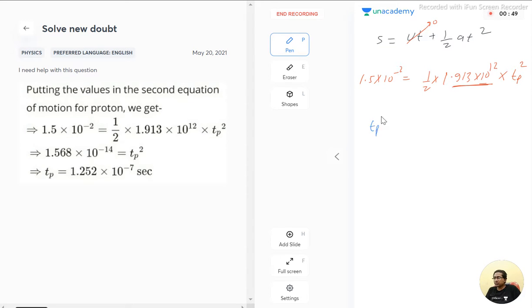So tp square can be written as 2 into 1.5 into 10 raise to the power minus 2, divided by 1.913. This 2 is multiplied by this and this gets in the division. Let's solve this. This becomes 3 into 10 raise to the power minus 14 divided by 1.913. So this is the value of tp square.